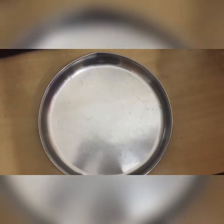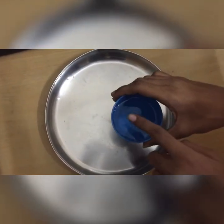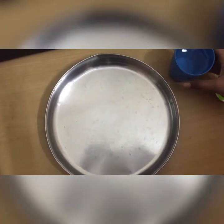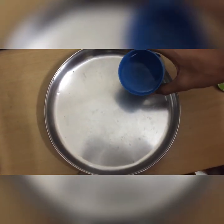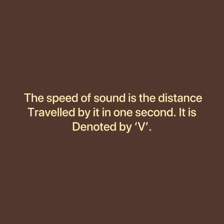We can also see some vibration through an activity. Take a plate, a cup of water, and a spoon. Pour the water into the plate, then hit the plate with the spoon. Now you can see the vibrations in the water.